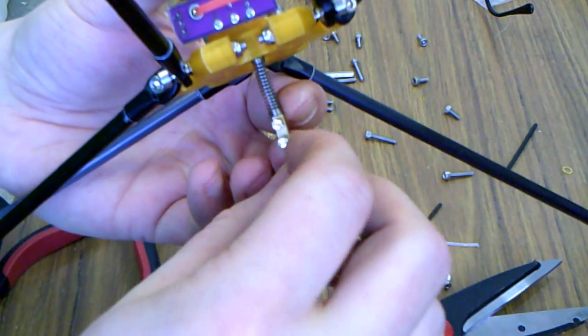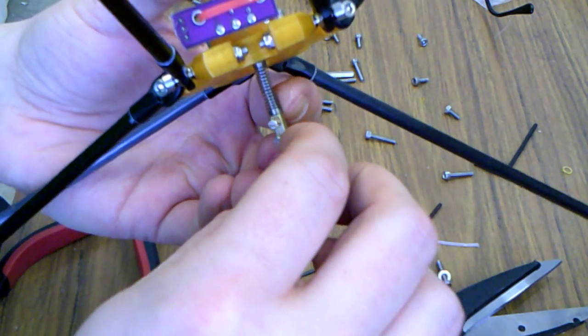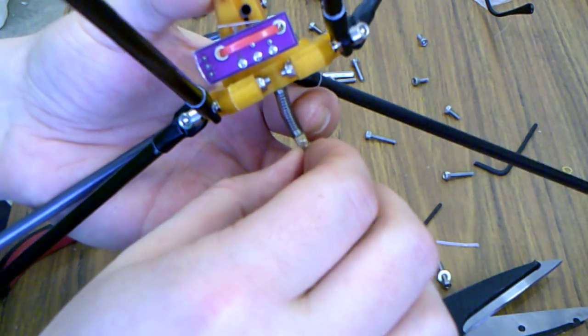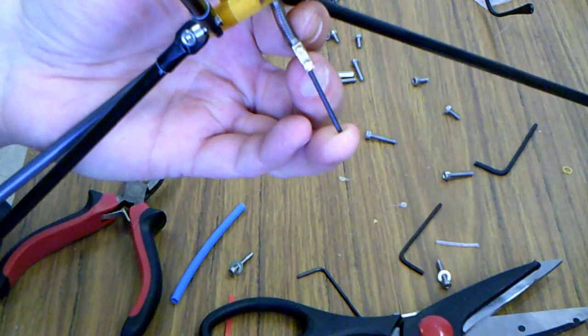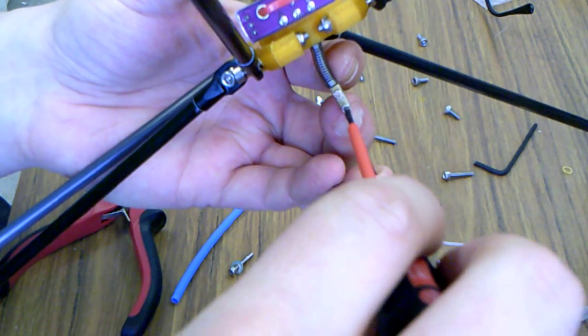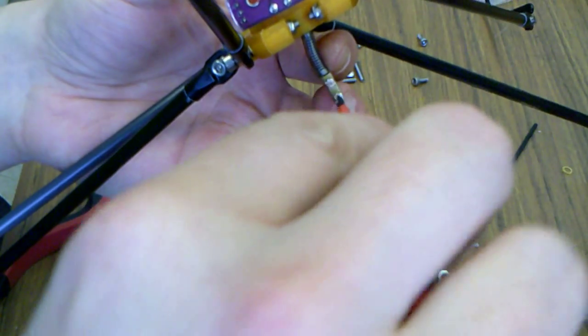What you want to do is pull it tight, but not too tight, because you've got to have some leeway for the movement. So pull it tight and tighten up your Euro terminal.